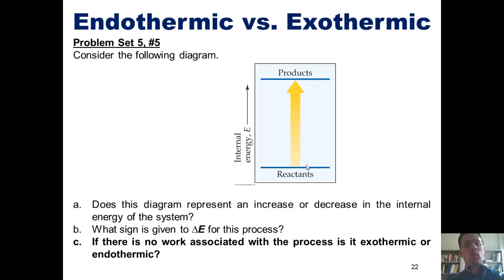Remember, endothermic processes, ones in which the system is absorbing heat from its surroundings, have a positive delta Q. And exothermic processes, ones in which the system gives off heat to its surroundings, have a negative delta Q.